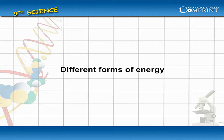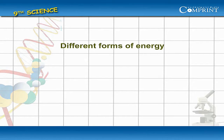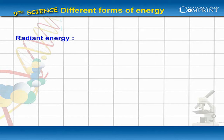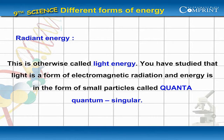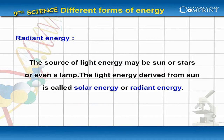Different forms of energy — radiant energy, otherwise called light energy. You have studied that light is a form of electromagnetic radiation, and energy is in the form of small particles called quanta. The source of light energy may be the Sun, stars,